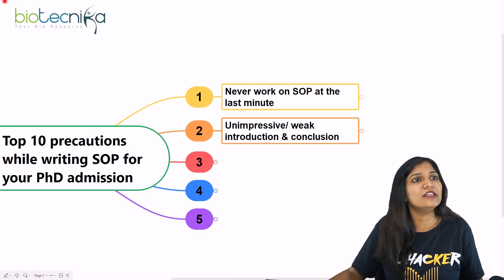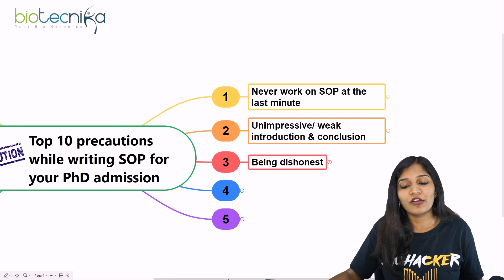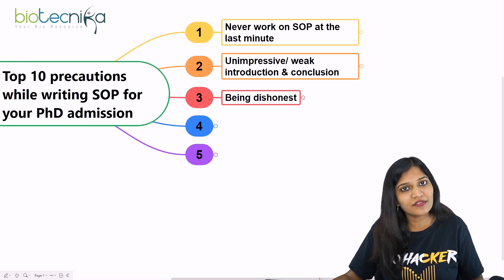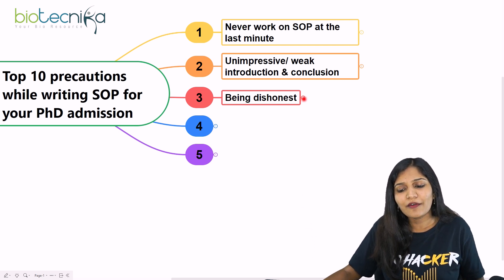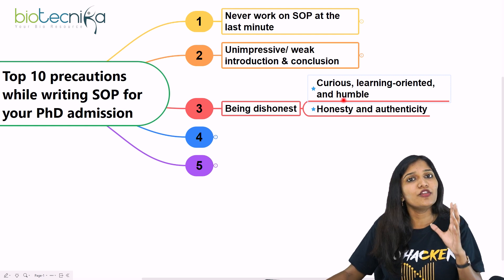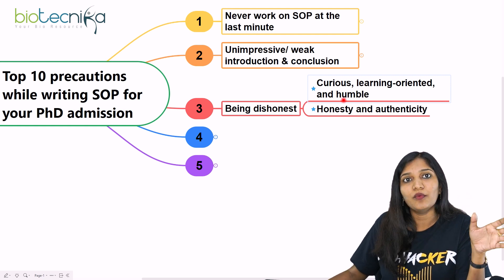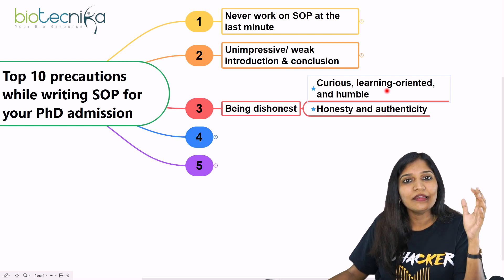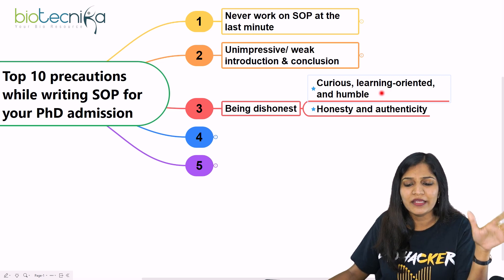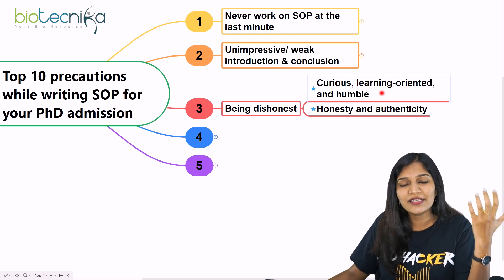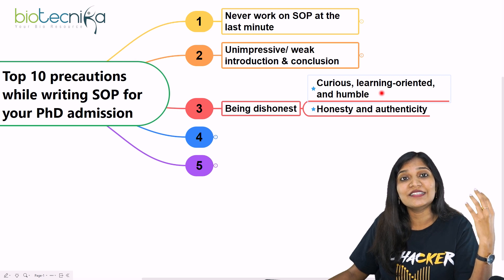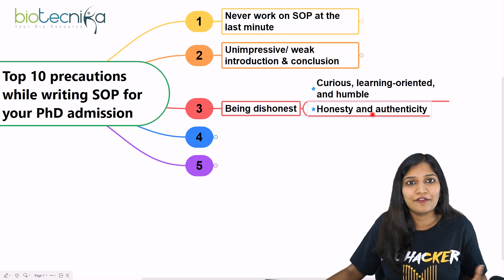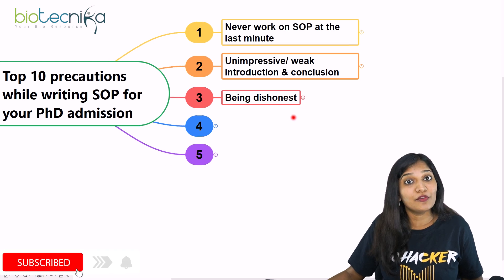The third precaution: never be dishonest when writing your SOP. Always be genuine — whatever you have done and whatever you know, be honest. Be curious and show enthusiasm that you are interested in the work and eager to join the university's program. Always be humble and show in your words that you are not over-exaggerating. Do not copy from someone else or give false information.